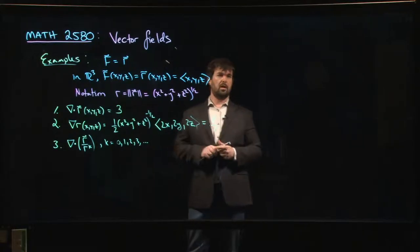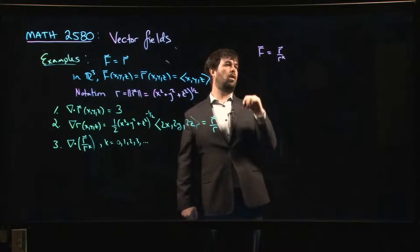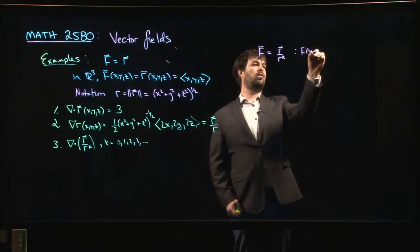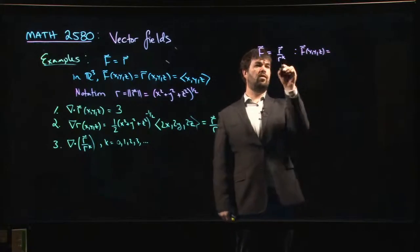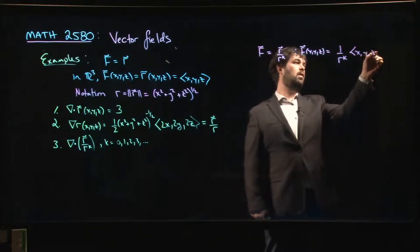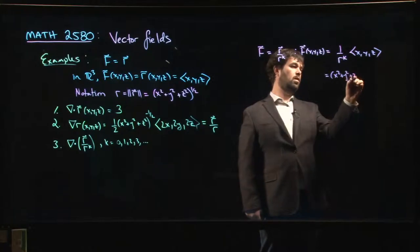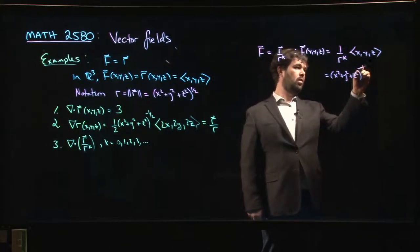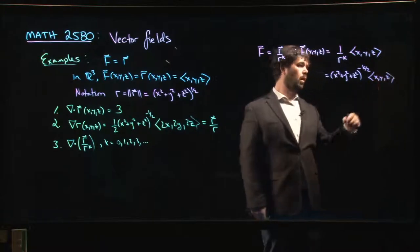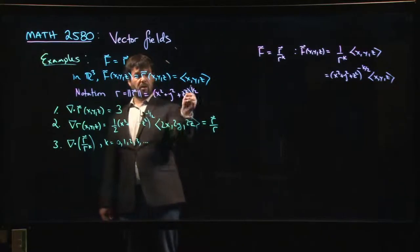So let's think about this, how do we set this up? If my vector field f is R over R to the k, then that means that what I've got here is that f of XYZ is, this is a scalar, it's 1 over R to the k times XYZ. So this is going to be minus k over 2 times XYZ. Take this to the power k, I'm going to get k over 2, it's in the denominator, so I should have minus k over 2.